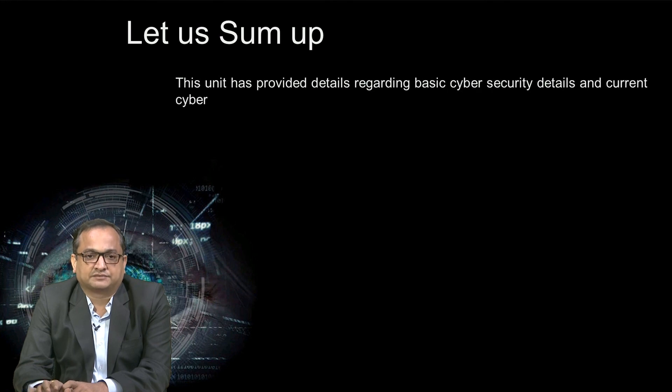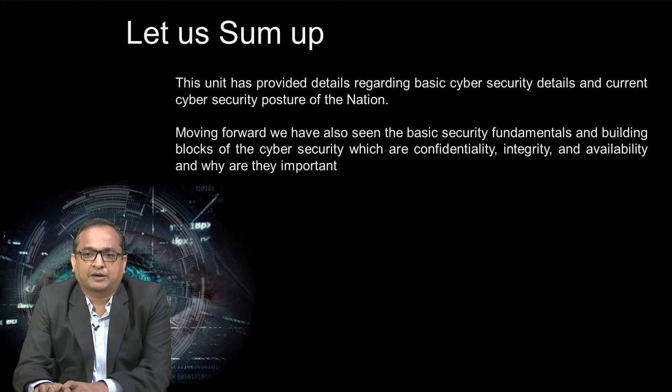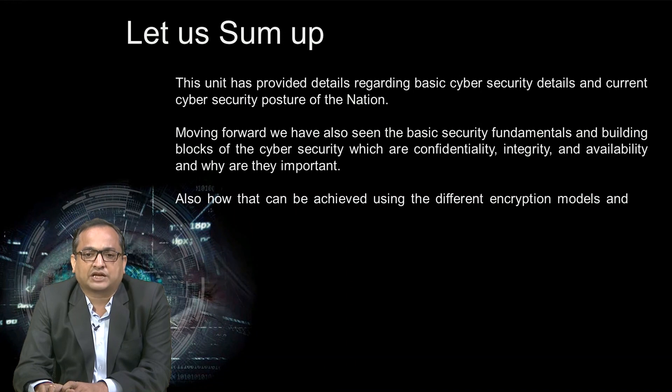Friends, let us summarize this session. This unit has provided details regarding basic cyber security and current cyber security postures of the nation. We have also seen the basic security fundamentals and building blocks of cyber security — confidentiality, integrity and availability — and why they are important, and how they can be achieved using different encryption models with pictorial representation. This is all about cyber security essentials for the course on cyber security tools, techniques and countermeasures. We will meet again in the next session for Unit 2 of the same course. Till then, goodbye and thank you.